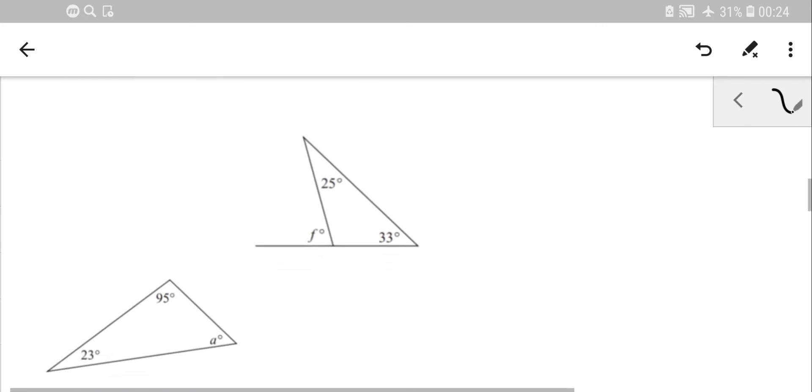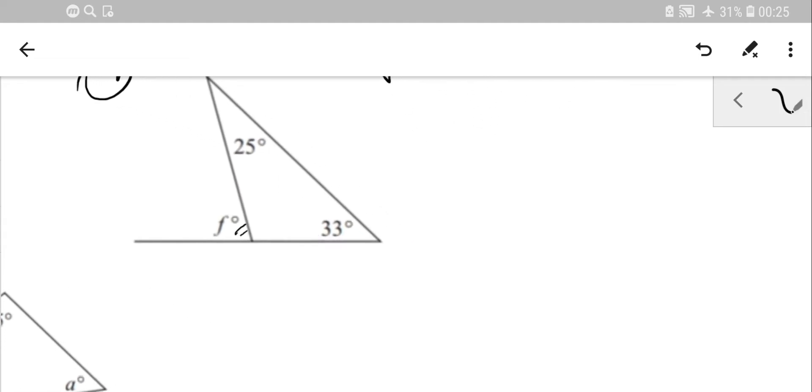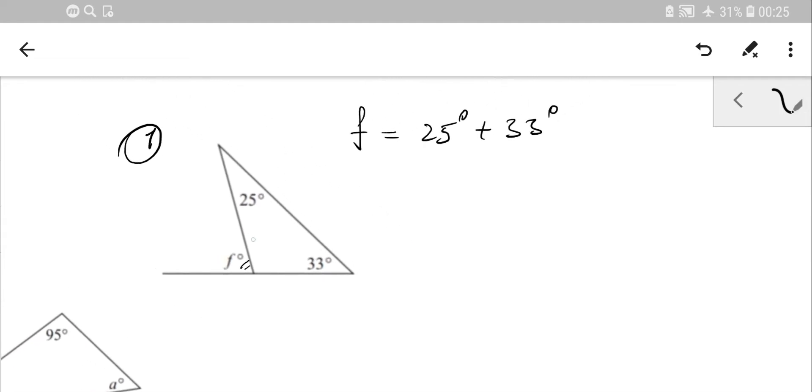We have this as the first triangle. We need to figure out F as the angle. So what we can do: we know the property that the exterior angle of a triangle is equal to the sum of two opposite interior angles. So it looks like 25 plus 33.